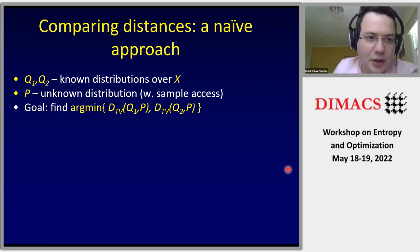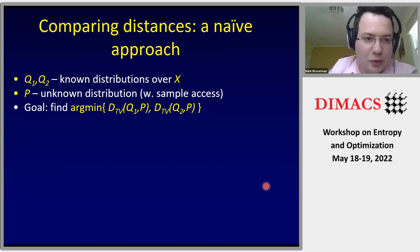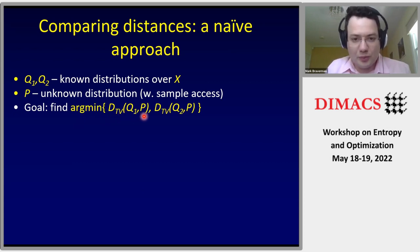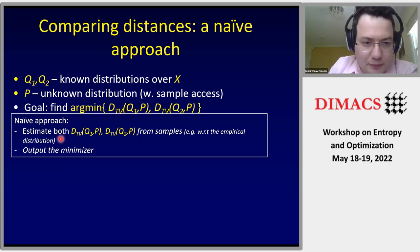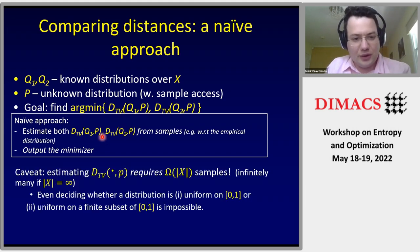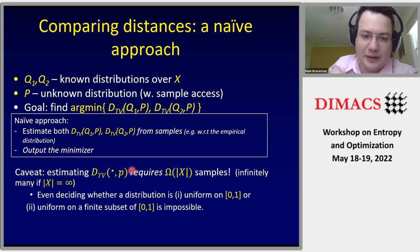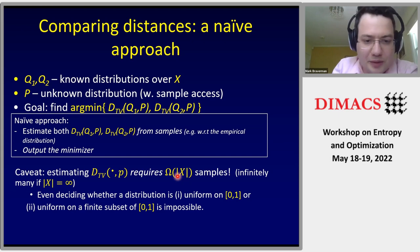Some bad news first. As stated, it's impossible even with n equals 2. Say we have two distributions q_1 and q_2 and we want to find which one is closer to p in total variation distance. The naive approach that doesn't work is to estimate the total variation distance directly: if x is finite it requires basically the size of x samples, and if x is infinite then it is just impossible.